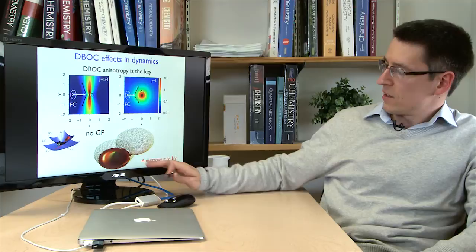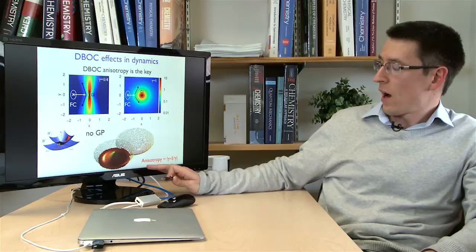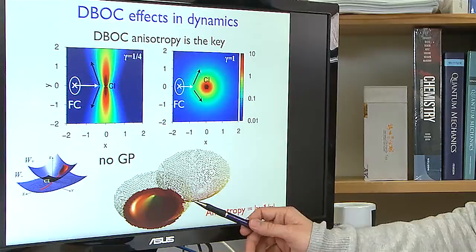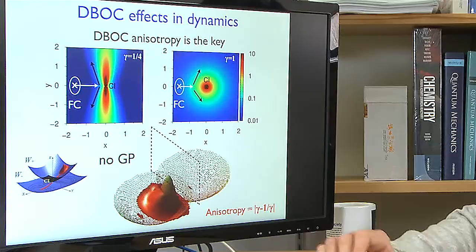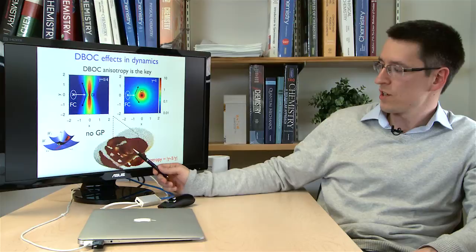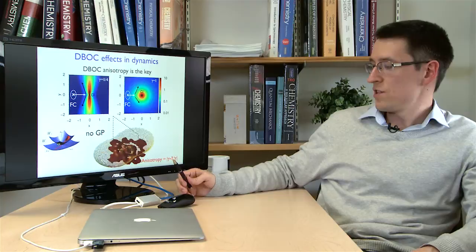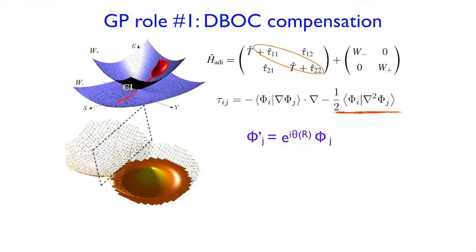To see that more dynamically, here there is a simulation without geometric phase effects, on the highly anisotropic case where the DBOC term is quite extended. We represent the wave packet that is moving, and the DBOC term appears like a wall that crushes the wave packet essentially. The wave packet cannot come very close to the conical intersection region, but rather is smashed by this extended wall that DBOC produces.